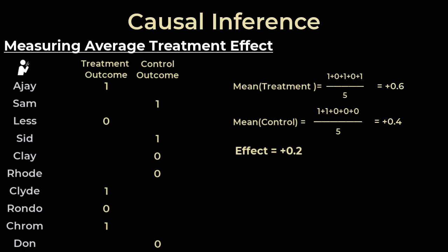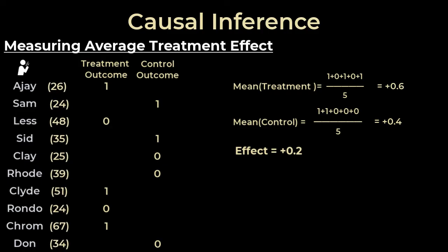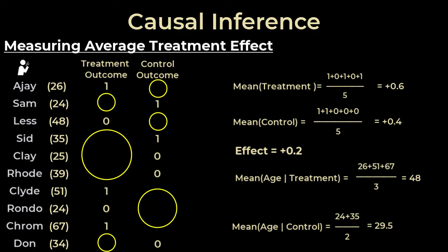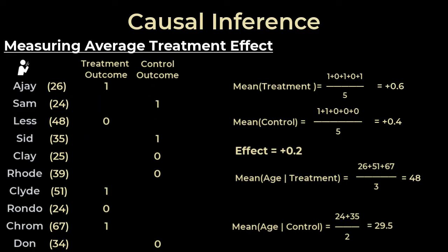But there's a problem. Let's add a column for age. The average age for those who received the treatment is 48, while that of the control is only 29.5. That's a big enough difference that age could potentially be causing some effect on the output — age is a confounding variable. To solve this we need to determine the counterfactuals for every person. The counterfactuals essentially ask: for the people who received the elixir, would they have gotten better without it? And for the people who didn't receive the elixir, would they have gotten better with it?